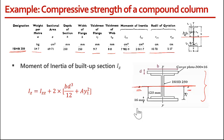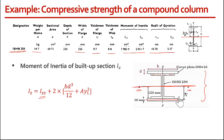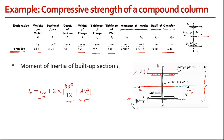To find IZ, I start with the moment of inertia of the ISHB 250 section, which I'll call IZZ. Then I add the moment of inertia of the cover plates. For each cover plate, I find the moment of inertia about its own neutral axis using BD³/12, and then apply the parallel axis theorem using area times distance squared. Since we have two cover plates — one on the top flange and one on the bottom — we multiply by 2.